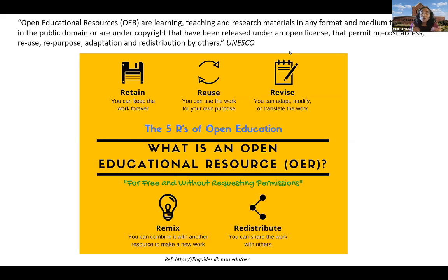The motivation behind using open educational resources — the key points are summarized with five R's: retain, reuse, revise, remix, and redistribute. When it comes to my motivation, I always think back about my undergraduate years when I had to wait to buy the textbook because they were so expensive. Research shows US students spend about $600 to $1,000 on textbooks, and Kernical Higher Education published that 7 out of 10 students do not buy textbooks due to the cost.